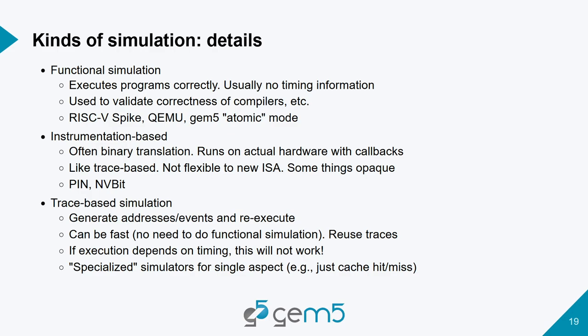Trace-based simulators generate a trace of addresses or events and then re-execute that trace. They can be very fast — you don't have to redo the functional simulation every time — and you can reuse traces. However, a big downside is that if execution depends on timing, the trace is invalidated when timing changes. This makes it difficult to get accurate results for multi-threaded applications or applications that access the OS or do IO. Trace-based simulators are often specialized for a single aspect — cache hit/miss rates or branch predictor accuracy — but not overall performance.